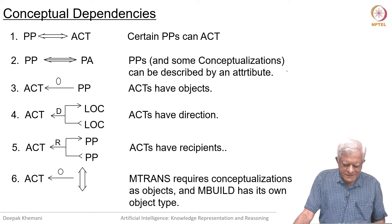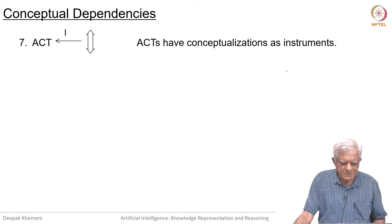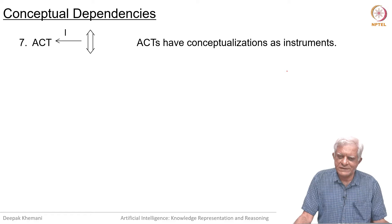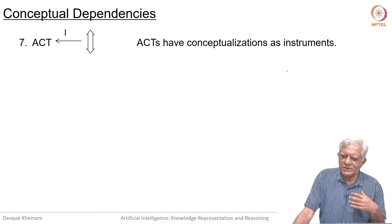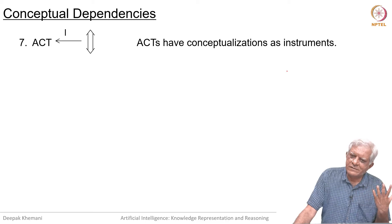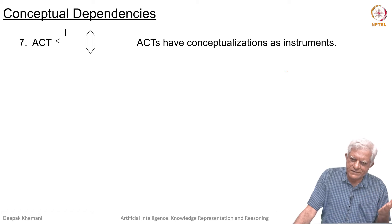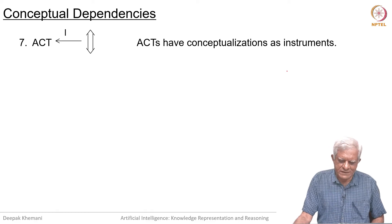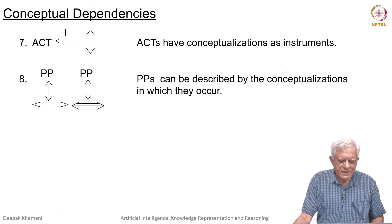M-trans — we will see that M-trans is one of the basic actions — requires conceptualizations as objects, and another action called M-build has its own object type. Acts can also have conceptualizations which are instrumental. For example, 'John went to the canteen by riding on his bike' — the second conceptualization is an instrument by which the first act is accomplished.